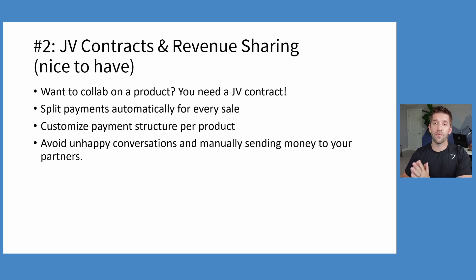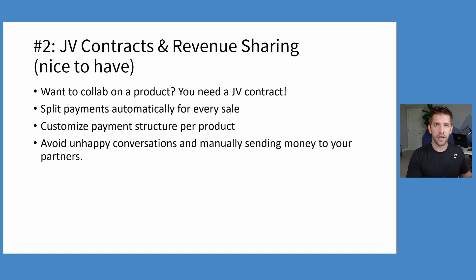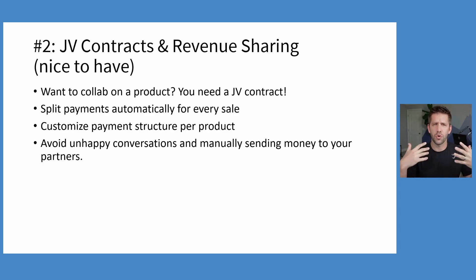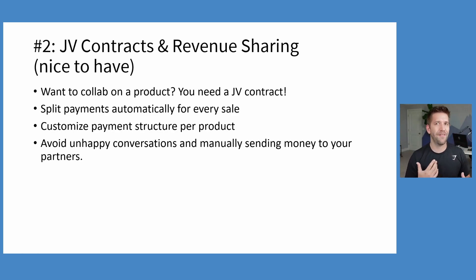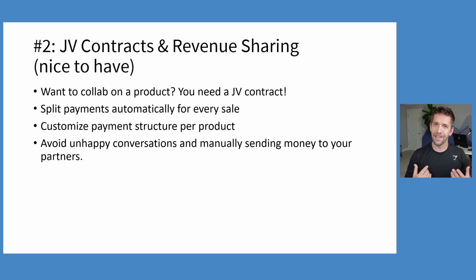Number two: JV contracts and revenue sharing. I call this a nice-to-have because I don't think a lot of people do JV on product sales, partly because they're kind of complicated. So ThriveCart makes it easy. Let's say you provide the audience, somebody else provides the information, and you form a JV partnership — joint venture. You sell this thing together. You might set up: I'm going to get 40% of every sale, you get 60%. That's a mess if you're just doing it by spreadsheet or trying to run a table at the end of the month. That can cause bad friendships to happen, and we don't want that.